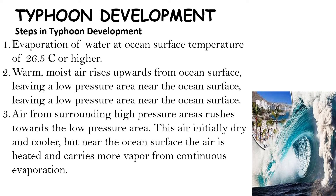Warm, moist air rises upwards from the ocean surface, leaving a low pressure area near the ocean surface. Air from surrounding high pressure areas rushes towards the low pressure area. This air is initially dry and cooler, but near the ocean surface the air is heated and carries more water vapor from continuous evaporation.